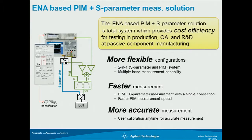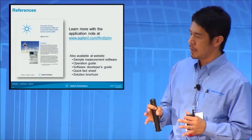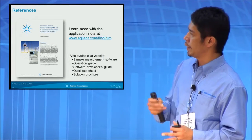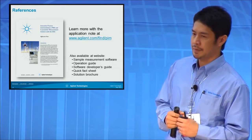In summary, this is our proposal for an ENA-based PIM measurement solution, offering more flexible configuration, faster measurement speed, and more accurate measurement. We have application notes describing how to measure PIM and how to calibrate the system, and also sample software for the network analyzer. Please visit our website to download these materials.